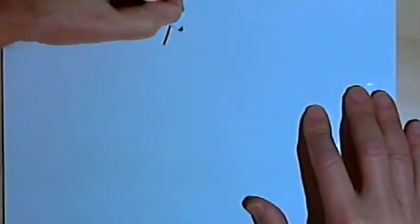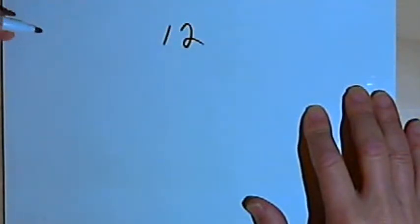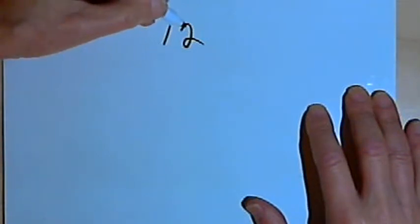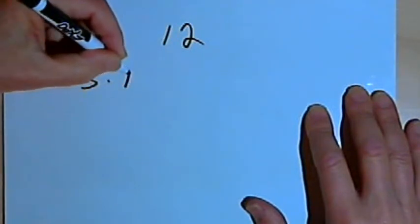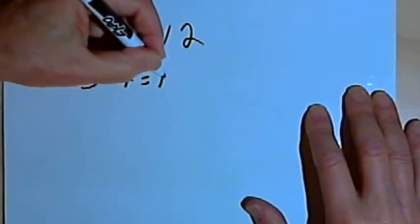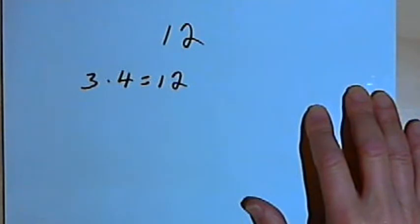So let's look at factorization. Let's say I have the number 12 and I want to break it down into some of the factors that I can multiply together to make the 12. So I could say that 12 is a result of multiplying 3 times 4. 3 times 4 equals 12.